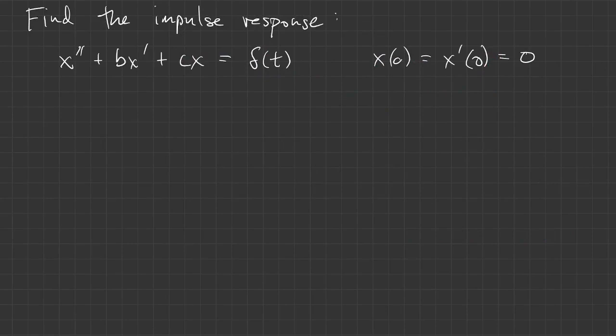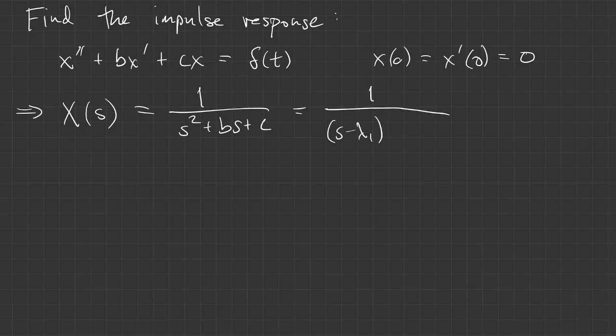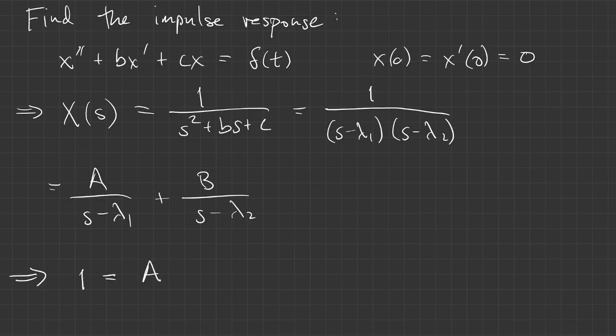So now we ask, what does the impulse response look like in the second order problem? Again, its transform is one over the characteristic polynomial. The roots of the characteristic polynomial are the eigenvalues, and we can write this in partial fraction form. As usual, clear the denominators and substitute in the pole values one by one to determine a and b.